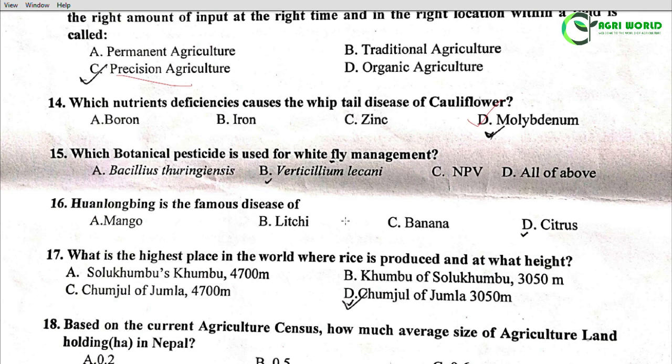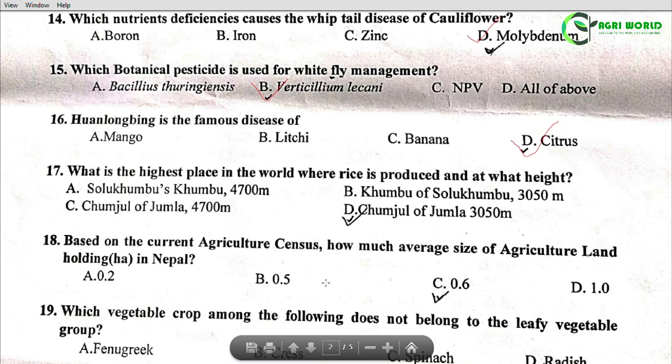Question 16: Huanglongbing (Wolongbing) is the famous disease of which crop? Options: Mango, Litchi, Banana, Citrus. The correct answer is Citrus.